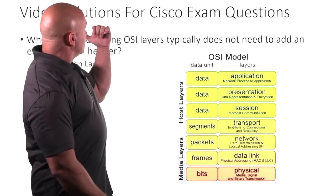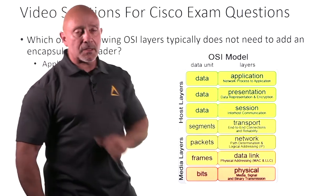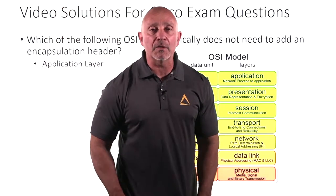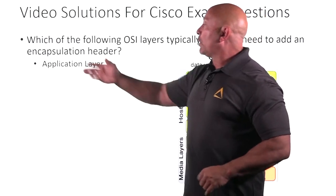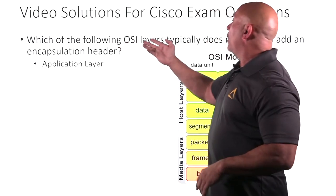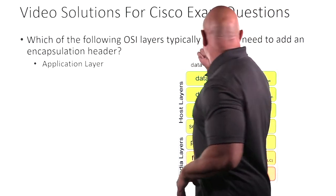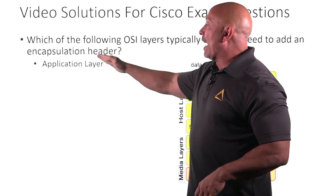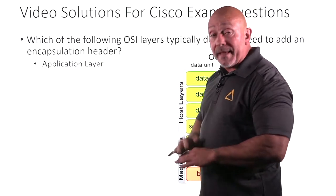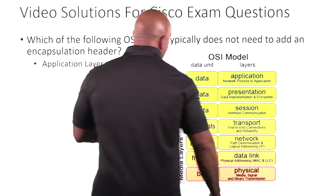Welcome back everybody — video solutions for Cisco exam questions from Alpha Prep. Which of the following OSI layers typically does not need to add an encapsulation header? The answer is the application layer.